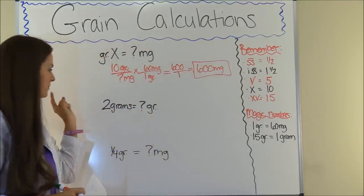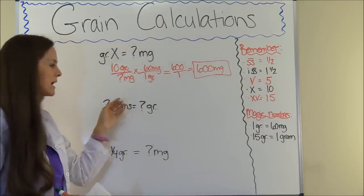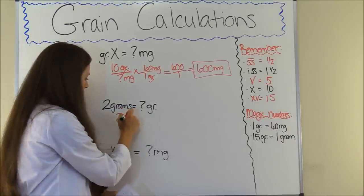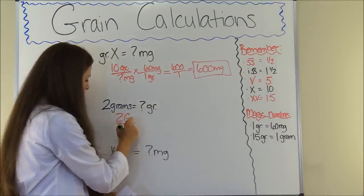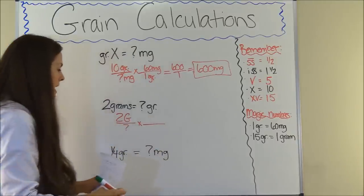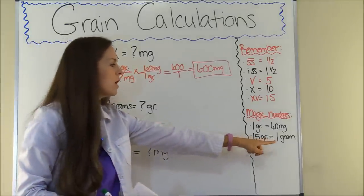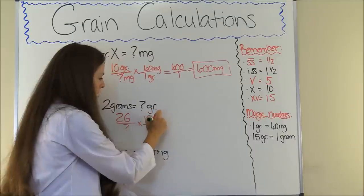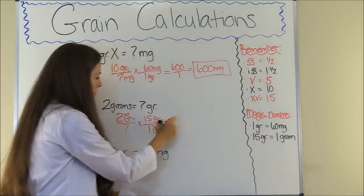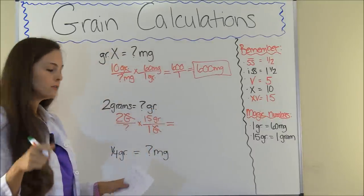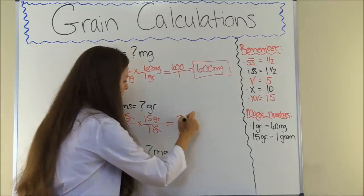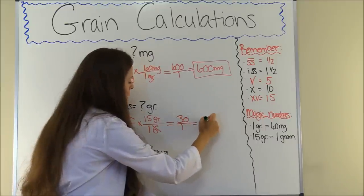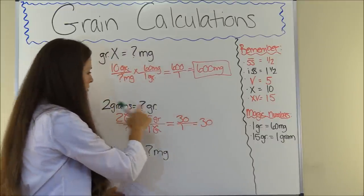Next problem: two grams equals how many grains? Let's set up our problem. Two grams equals how many grains. We know from our magic number that one gram equals 15 grains. Grams cancels out. So two times 15 is 30, divided by 1 is 30. So two grams equals 30 grains.